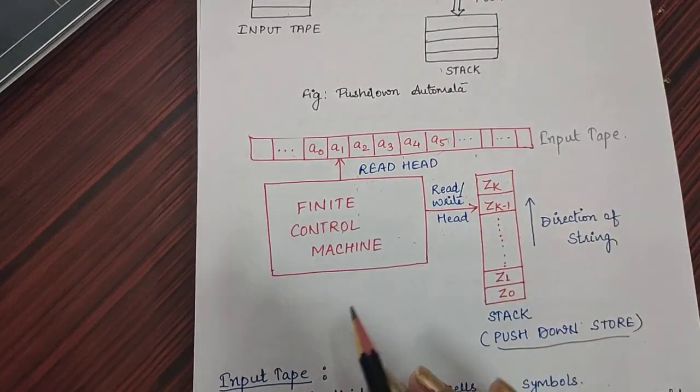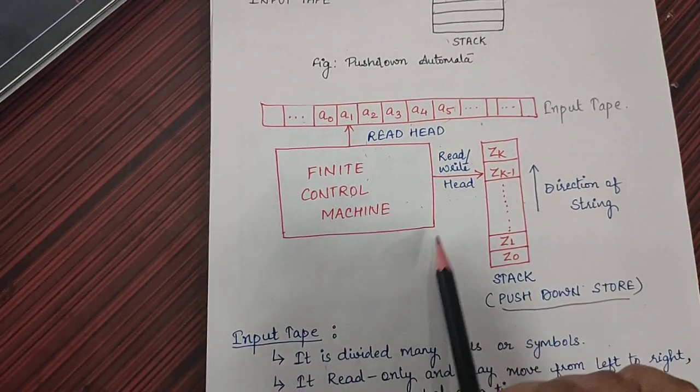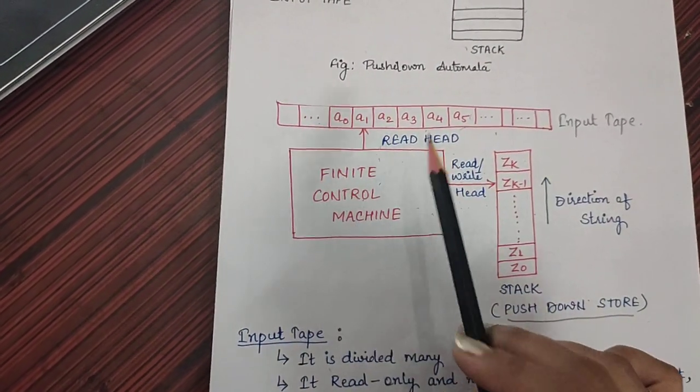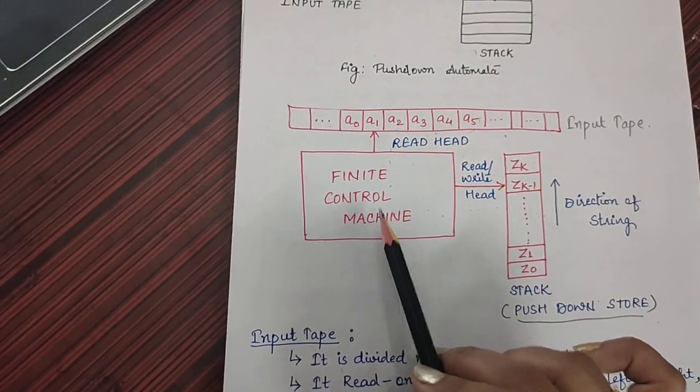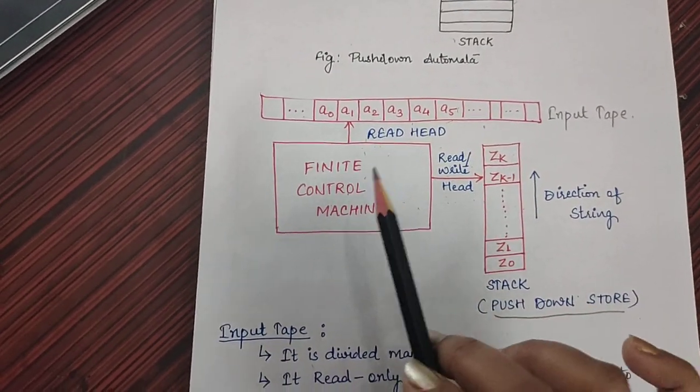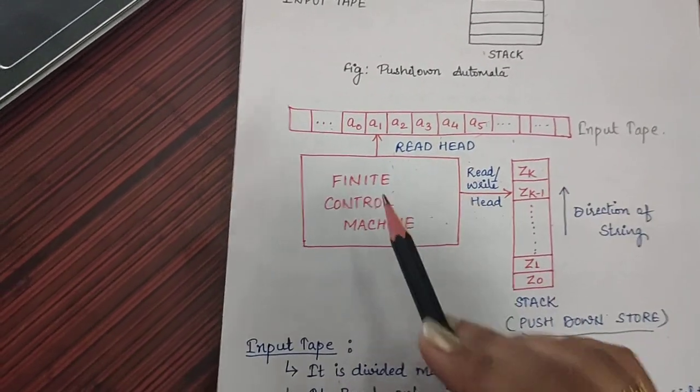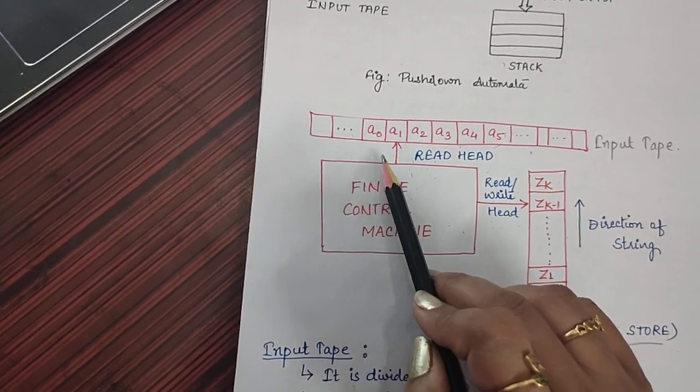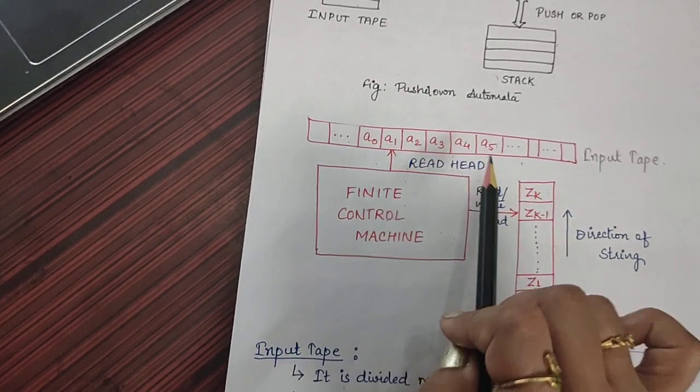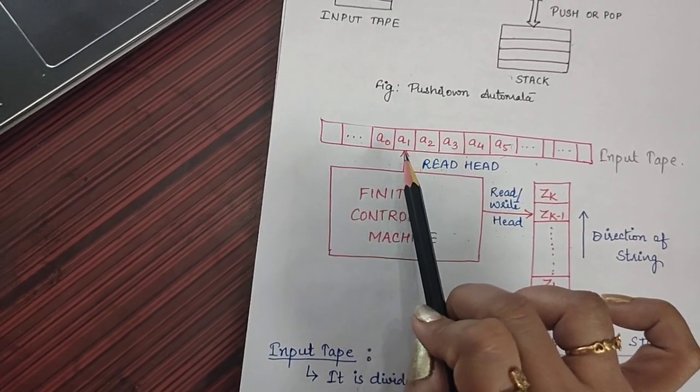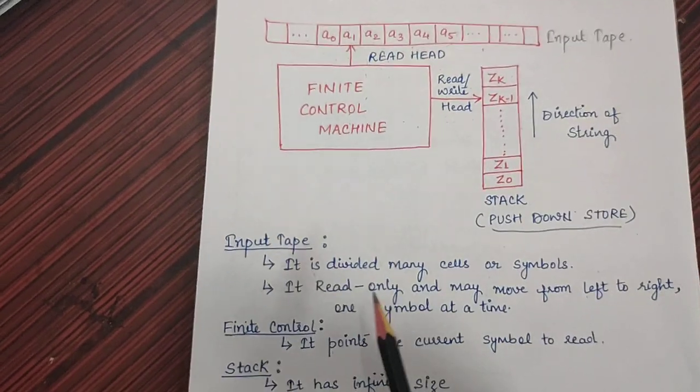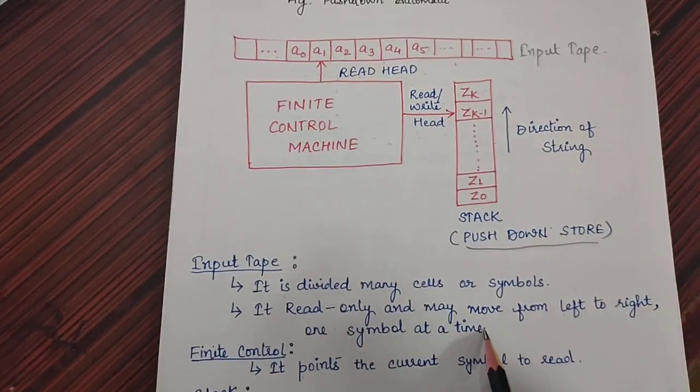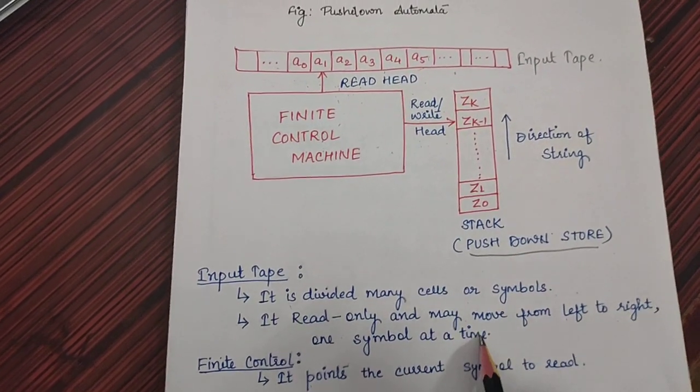Now, if we will go in detailed way or detailed diagram, this is a finite control machine. This finite control machine is having an input tape. This input tape is connected to this machine but it has only read-only feature or read-only property. That finite control machine can read this data or read these symbols, and these symbols or the header will move from left to right only and it can read one symbol at a time. The input tape is divided into many cells or symbols. It is read-only and may move from left to right one symbol at a time.